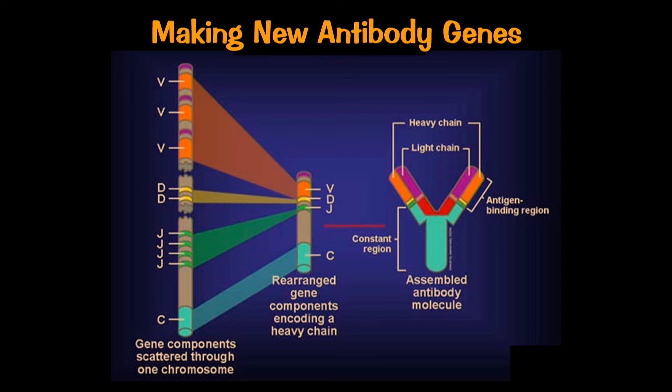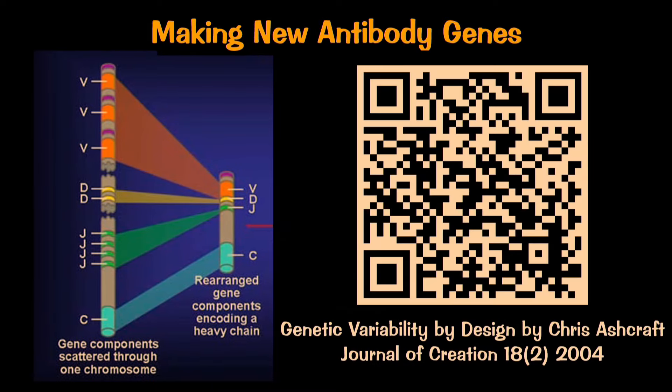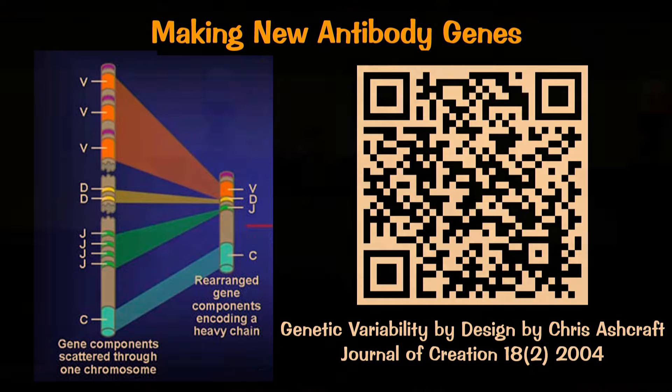This stumped evolutionists for years. In classic evolutionary thinking, they assumed that as it was splicing together these templates, it did so very haphazardly and randomly, creating mutations and overlaps — just randomly making these antibody genes hoping one would label the foreign antigens. But they eventually discovered that after assembling the templates, the B cell comes through and makes single nucleotide edits to the gene to make the exact protein necessary to label that foreign antigen. This illustrates that genetic variability is by design.